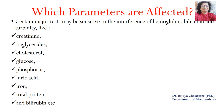Which parameters are affected? There are various parameters sensitive to interference by hemoglobin, bilirubin and excessive lipoprotein causing turbidity. These include creatinine, triglyceride, cholesterol, glucose, phosphorus, uric acid, iron, total protein, bilirubin and others. All these factors can be affected by the quality of the serum or plasma sample.